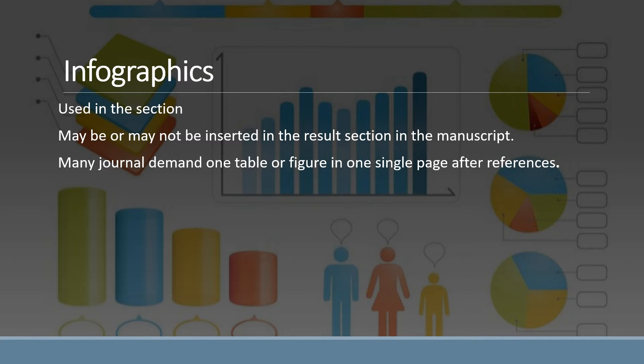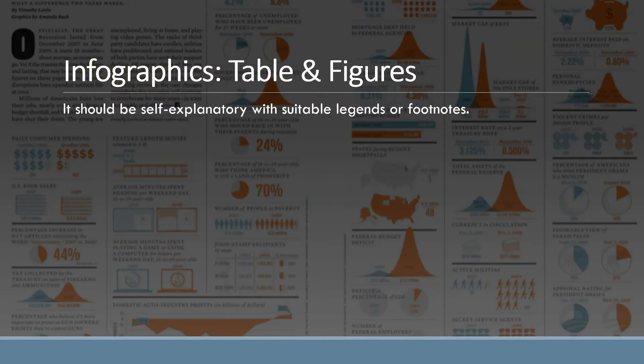So for the table and figure, they must be self-explanatory with suitable legends or footnotes. A reader should not need to refer the text to understand a particular table and figure. So it must be self-explanatory. All related information should be there.